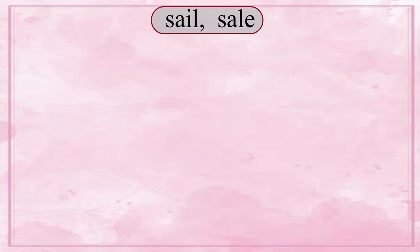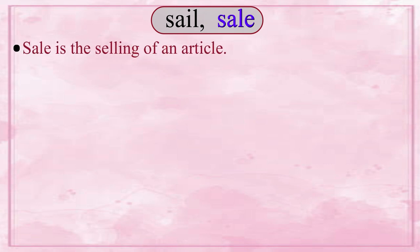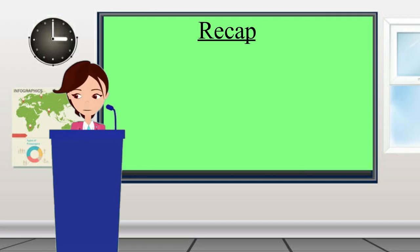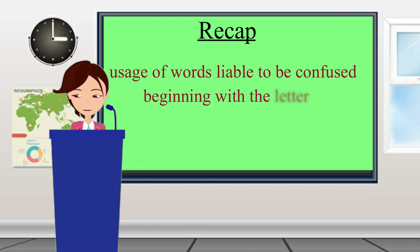Now let us understand the meaning of 'sale'. Sale is the selling of an article. For example: 'There is a clearance sale at Bata's.' In this module, we learnt the usage of words liable to be confused beginning with the letter S. Thank you.